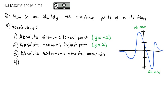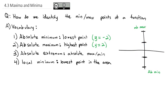We also have what we call local minimums, which is the lowest point in the area. There's nobody lower around the big dip, so we call it the absolute minimum. But we've got a little dip off to the right — we call that the local minimum, because it's a valley, just not the lowest valley overall. That's going to be at y equals negative 1.